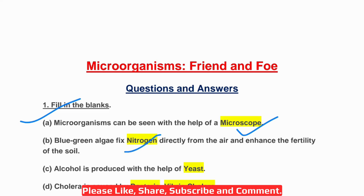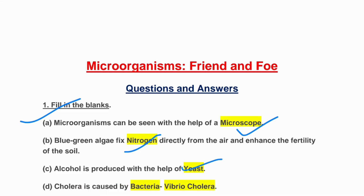C: Alcohol is produced with the help of yeast. D: Cholera is caused by bacteria — the name of the bacteria is Vibrio cholerae.